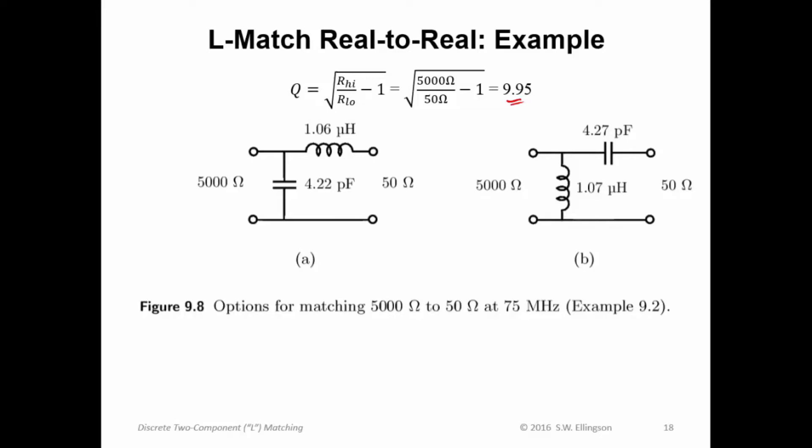You calculate the series and parallel reactances using the expressions I just came up with. There will be two solutions. Here are the two solutions, indicated as A and B here. In one case, we have a shunt capacitor and a series inductor. In the other case, we have a shunt inductor and a series capacitor. And those are the values. Those are the two possible solutions you get. At this point, you can confirm this on your own, and you should.